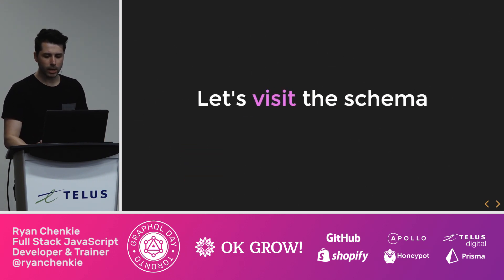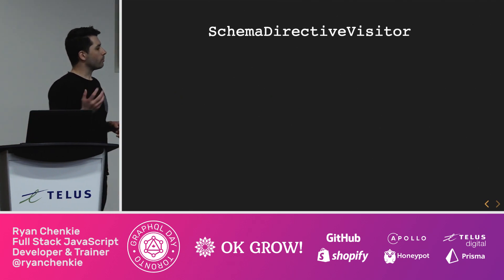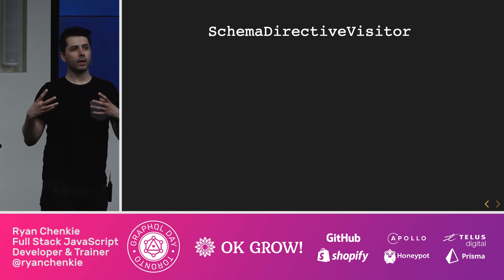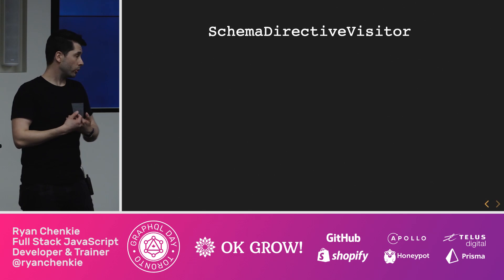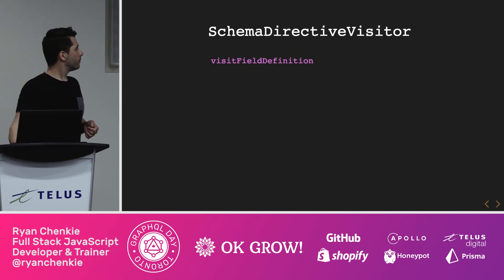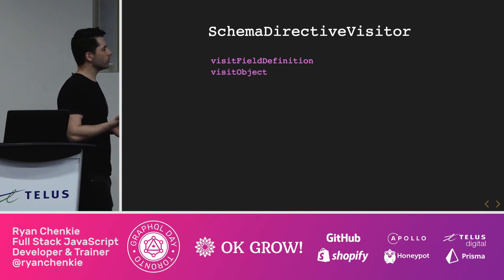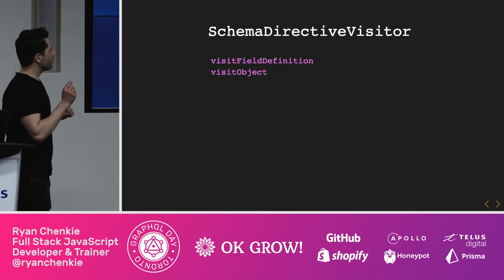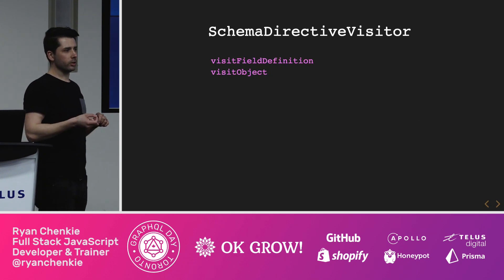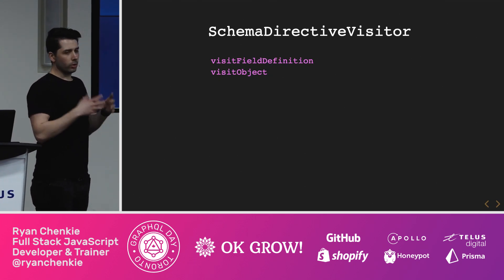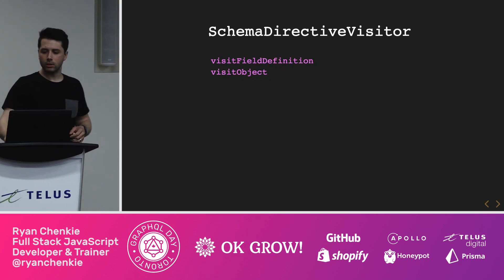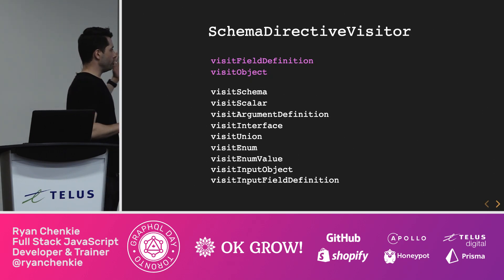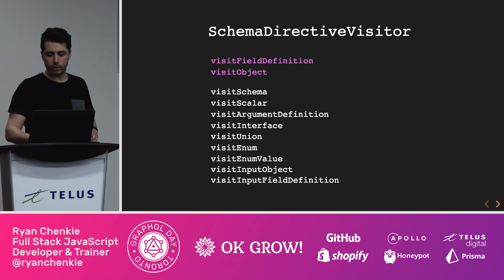So let's go visit the schema. With Apollo, we get this class called SchemaDirectiveVisitor. This is what you would use if you wanted to create the behavior for your custom directive. What you do is override some of its methods. The two that would probably be used most often are 'visit field definition' and 'visit object' — these define the points in your schema you want to affect. You can affect anything within your GraphQL schema: scalars, unions, enums, everything — but probably those two at the top you'd see most often.